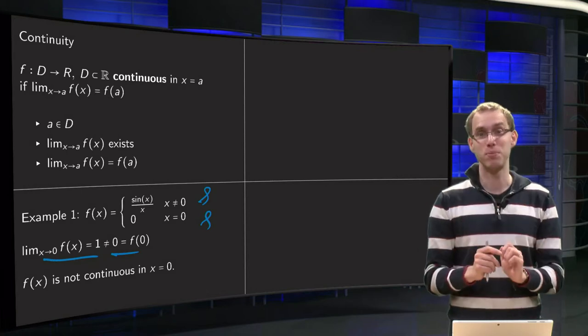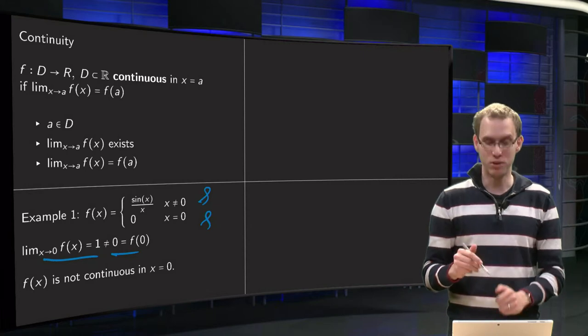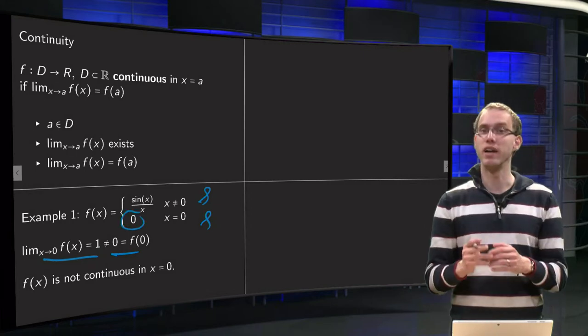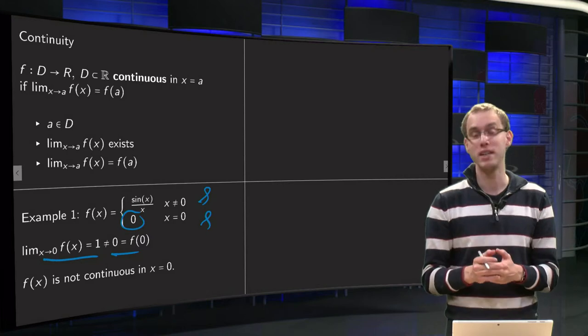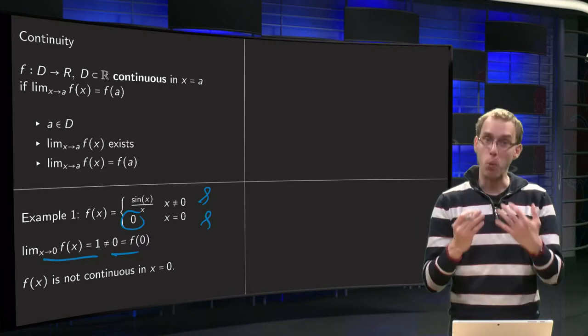We can of course make this particular function easily continuous by adjusting our choice. If we would have made the choice one instead of zero, our function would have been continuous.